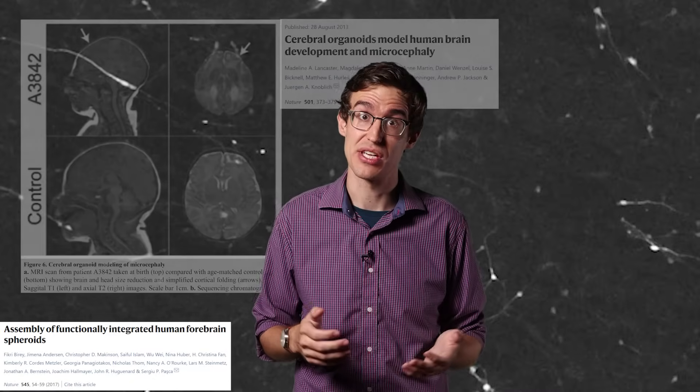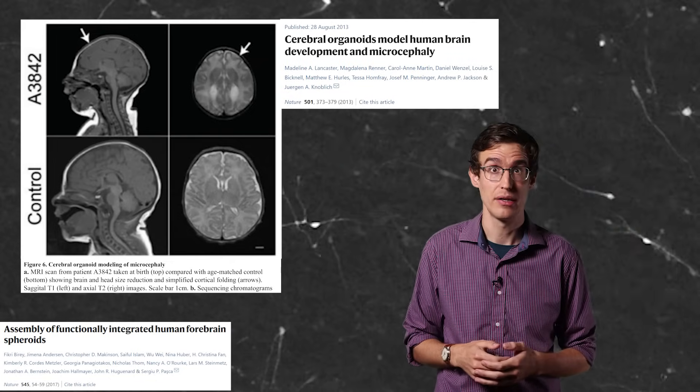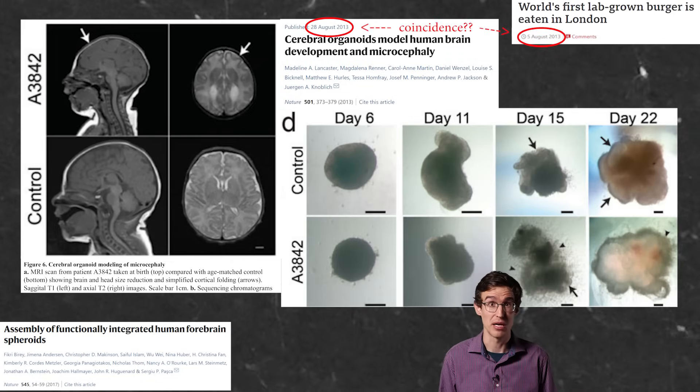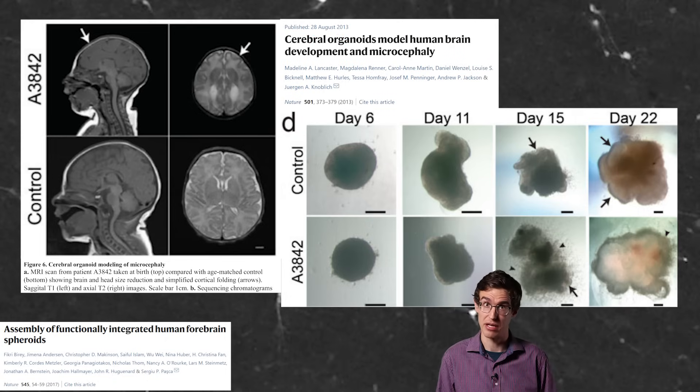So why are they making these mini-brains? Well, they make great models for studying brain development and what goes wrong with neurodevelopmental diseases. Some diseases, like microcephaly, are unique to humans, so animal models don't work very well. That's why they made the first human mini-brains to see how the microcephaly gene impacts brain development.